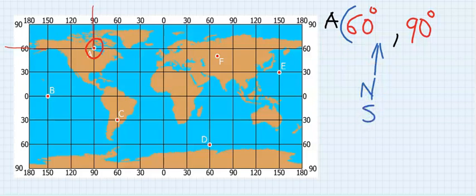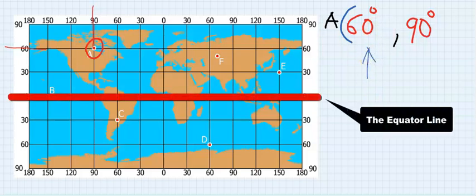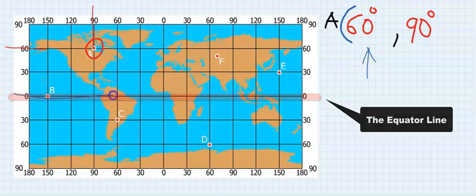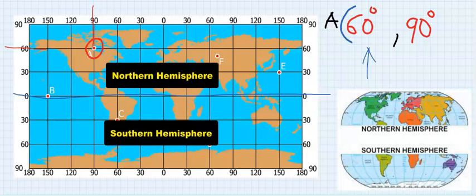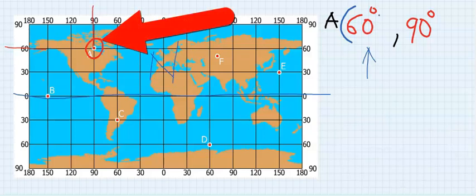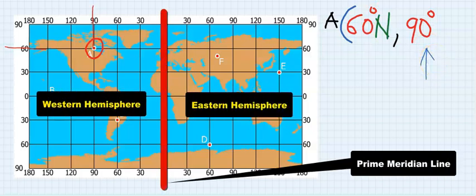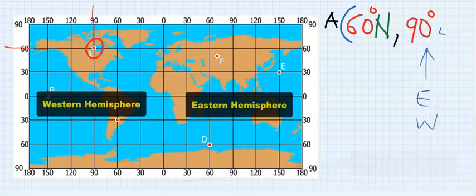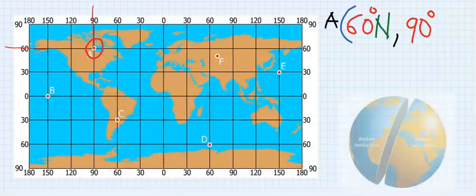Next, latitude is always the first one and must end with either north or south. So decide, is it north or south? The equator divides the earth into two, hence this is the northern part, so this will be north. Similarly, this is the longitude.